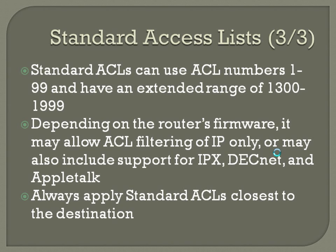Standard ACLs can use ACL numbers 1 through 99, but they also have an extended range of 1,300 through 1,999. Depending on the router's firmware, it may allow ACL filtering for IP only, or it may include support for other protocols like IPX, DECnet, and AppleTalk. You'll have to look in your router — you can check it when setting up an ACL, or look at the firmware and compare it on Cisco's website to determine whether it supports just IP or those others.